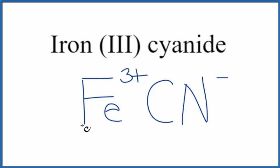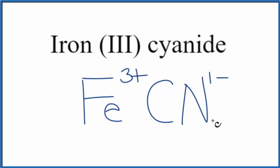So we have this transition metal here and nonmetals — this is an ionic compound. These charges have to add up to 0. So we have our 3 plus and our 1 minus. If we had 3 cyanide ions, 3 times the 1 minus is 3 minus, and that would balance the 3 plus.